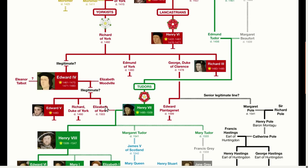Second, in order to cement his claim even further, he married Elizabeth of York, daughter of Edward IV. He convinced people that this marriage had in fact been legal and that the whole story of the first wife had been made up by Richard III in order to seize the throne. This made Elizabeth the most senior heir according to male preference rules, and it meant that all of their future descendants would have a better claim to the throne than anyone else.